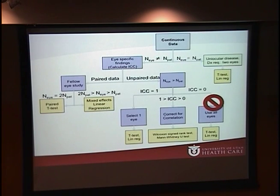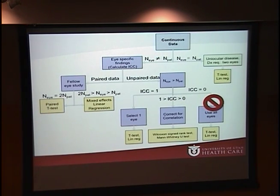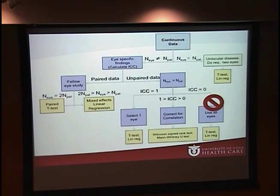If the number of eyes does not equal the number of patients, we have eye-specific findings and must calculate the correlation in the data. Next, we determine if the data is paired or unpaired. If paired, we have a fellow eye study and check whether the number of eyes is exactly twice the number of patients — if so, we can use a paired t-test. If not, we use mixed effects linear regression to correct for the difference between patients and eyes. For unpaired data, where there are more eyes than patients without necessarily two eyes per patient, the analysis becomes more complex.